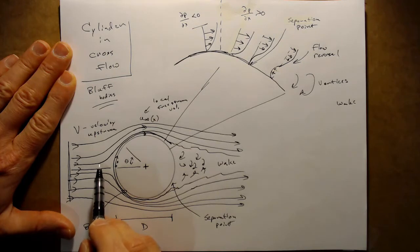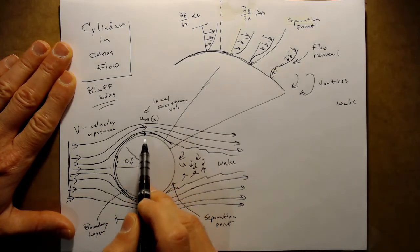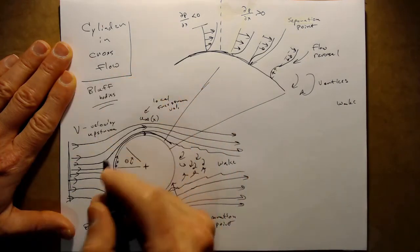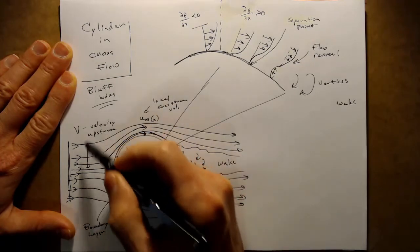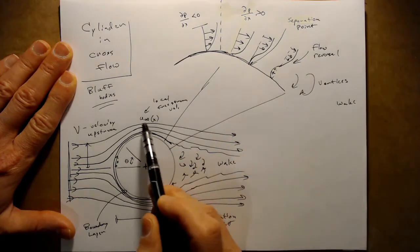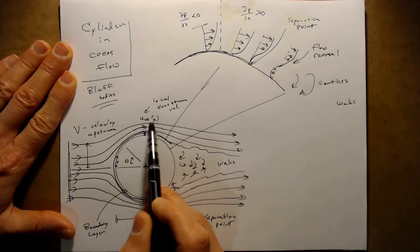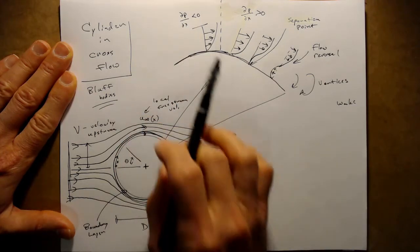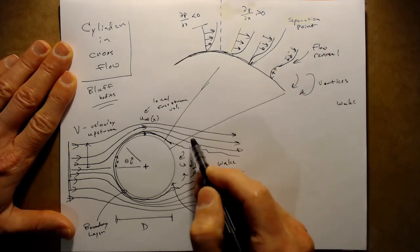The local free stream velocity u-infinity varies depending on position relative to the cylinder. Far away, u-infinity equals V, but as flow progresses around the cylinder, u-infinity must increase. From continuity, a section of flow passing the top half of the cylinder is compressed into a smaller area directly above it. For a relatively incompressible fluid, continuity tells us that the free stream velocity above the cylinder is significantly faster than it is upstream. As the flow progresses past the cylinder, the streamlines re-expand and the velocity decreases again.